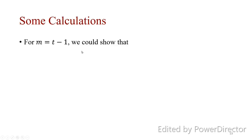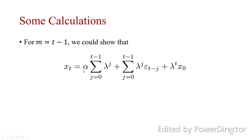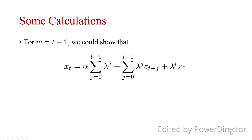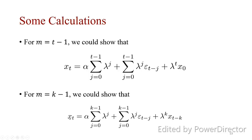For m equal to t minus one, we can show that x_t is defined as a summation. Choosing m = t-1, x_0 is constant and known; for convenience we assume it is zero, so that term drops out. This gives us the general closed-form expression for x_t. More generally, for m = k-1, there are only k variables between x_t and x_{t-k}, which is very important for computing the covariance relationship between x_t and x_{t-k}.